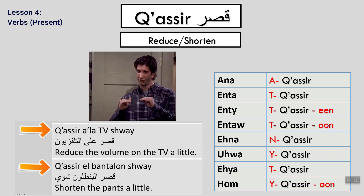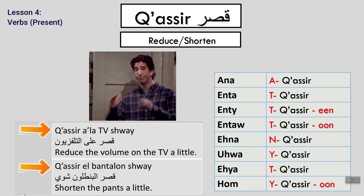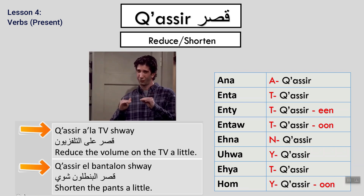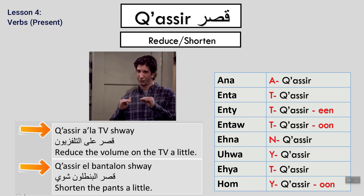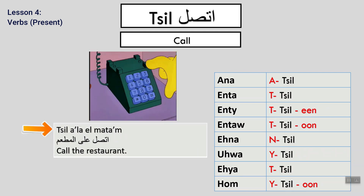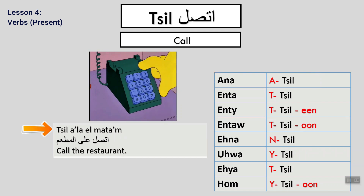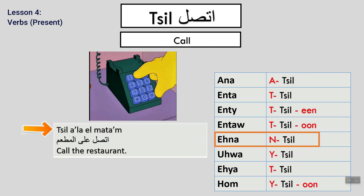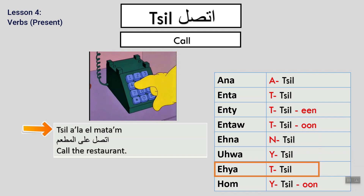Example: Qassr il-televizyon shway — shorten the TV a bit. Qassr il-bantalon shway — shorten the pants a bit. Next verb: Ittasal — to call. Ana attasal. Example: Ittasal 3ala il-mat3am — call the restaurant.